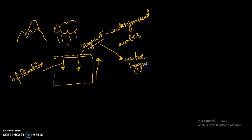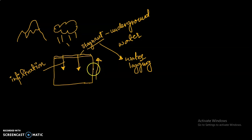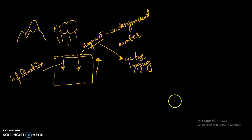The problem with water logging is that the stagnant water prevents roots from breathing properly because they don't receive any air. This is water logging — roots under that logged water cannot access air.